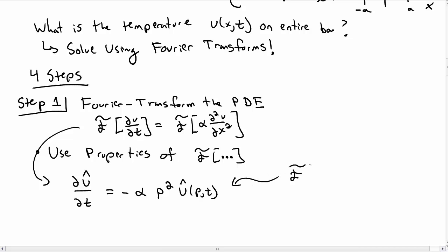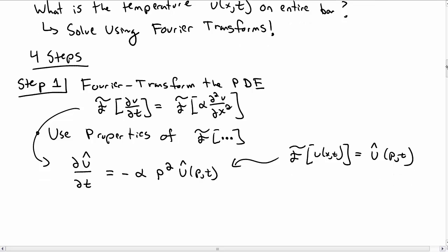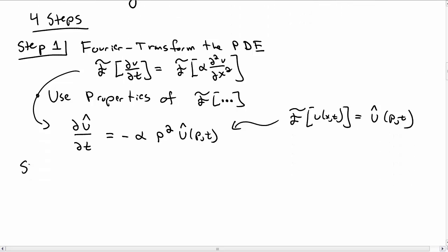We use the notation that we turn the Fourier transform of u of x and t into u hat of p comma t, a function of p and t, where p is that Fourier transform variable.